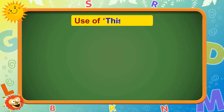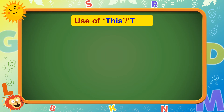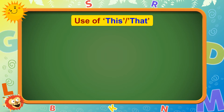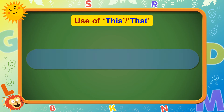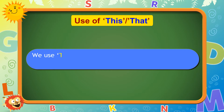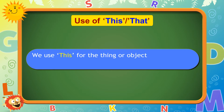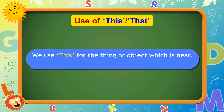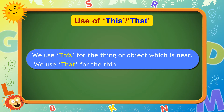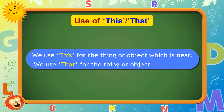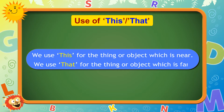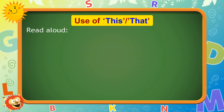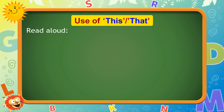Use of this and that. We use 'this' for the thing or object which is near. We use 'that' for the thing or object which is far. Read aloud.